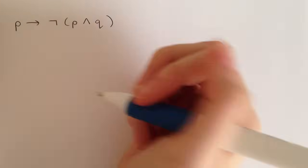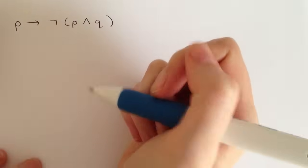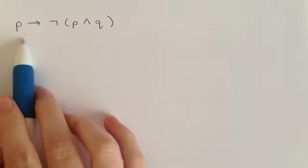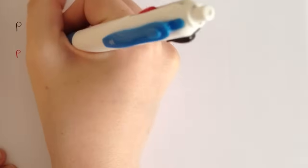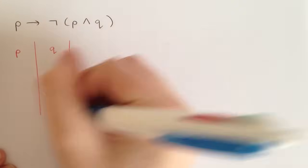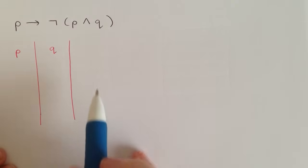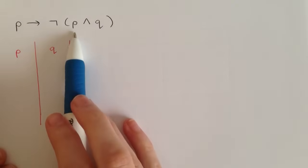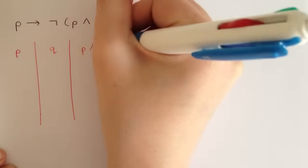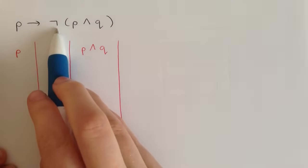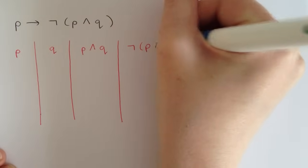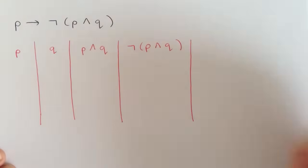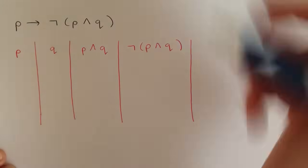How we start our truth table is by drawing up our columns. The first one we have is p, and we also have q, then we have p and q, and then we have the negation of p and q, and then the whole expression.